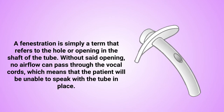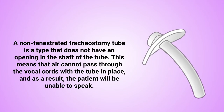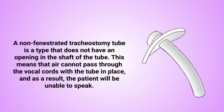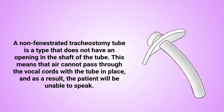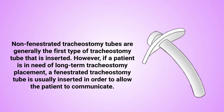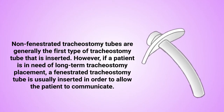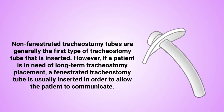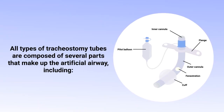Without that opening, no airflow can pass through the vocal cords, which means the patient will be unable to speak with the tube in place. A non-fenestrated tracheostomy tube does not have an opening in the shaft, so air cannot pass through the vocal cords and the patient will be unable to speak. Non-fenestrated tubes are generally the first type inserted; however, if a patient needs long-term tracheostomy placement, a fenestrated tube is usually inserted to allow the patient to communicate.